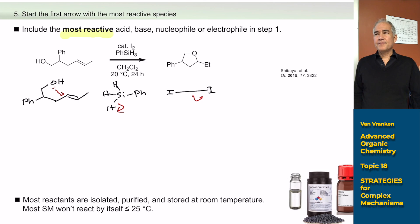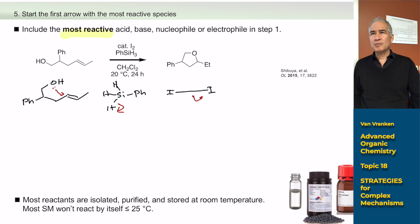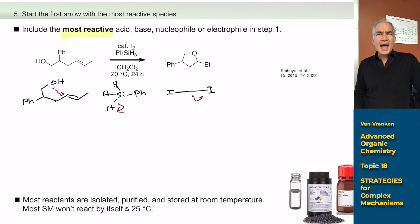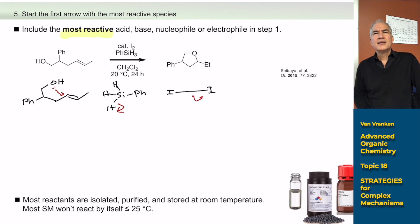When we left off on Wednesday, we were talking about general strategies for arrow pushing mechanisms — what are some general strategies you can apply whether you know how to start or not. We've been talking about some basic ideas like atom mapping, drawing reactants or intermediates in the same shape or orientation as the products, and making tables of bonds broken and bonds formed. These are powerful strategies to make sure you're breaking the bonds you need to break and forming the bonds you need to form.